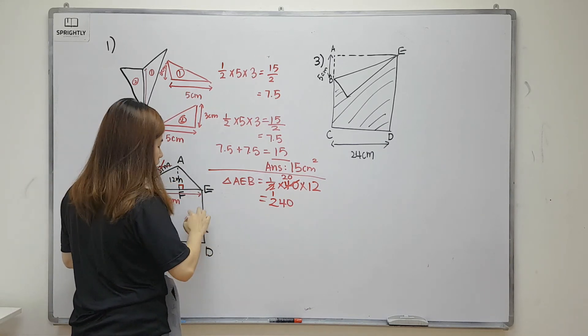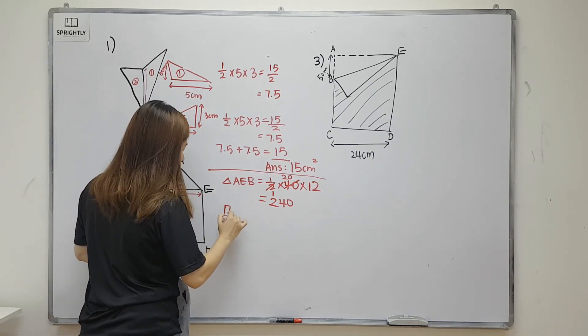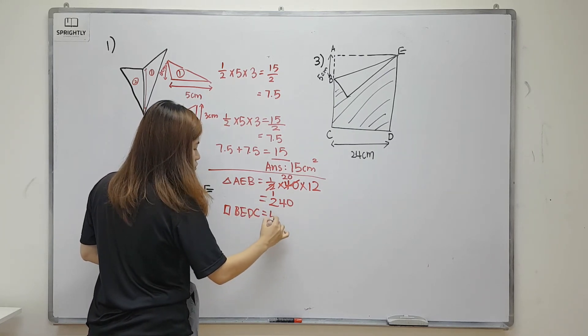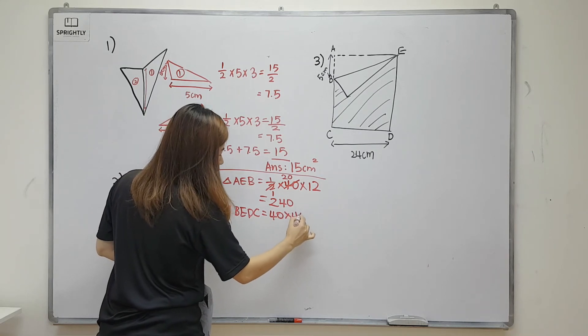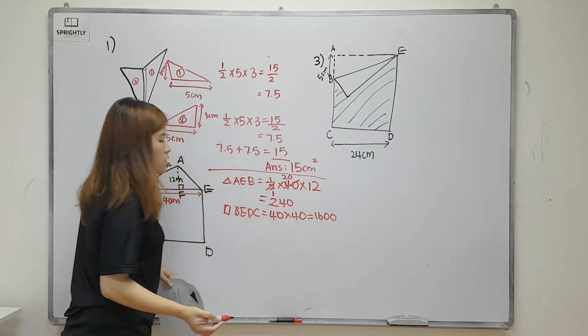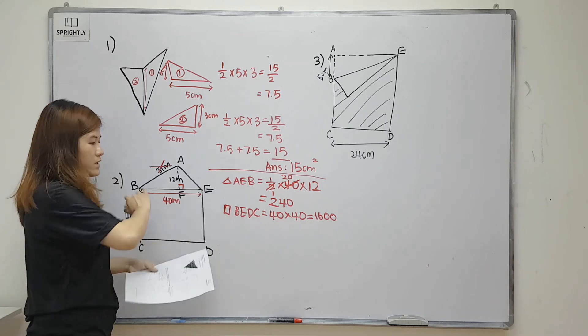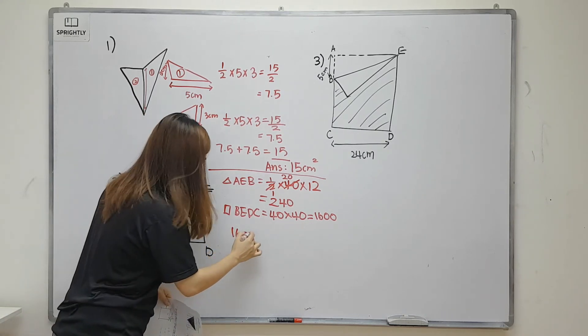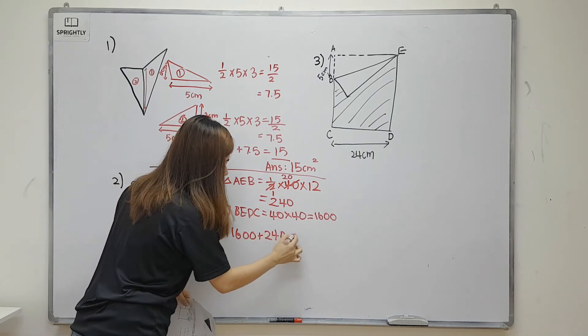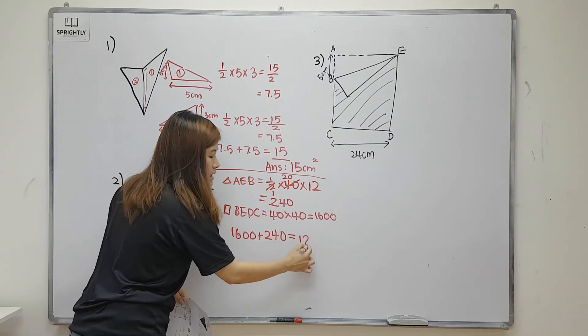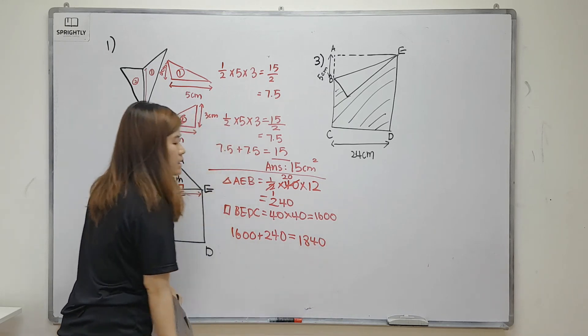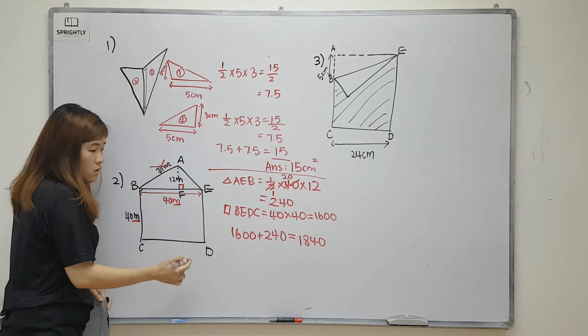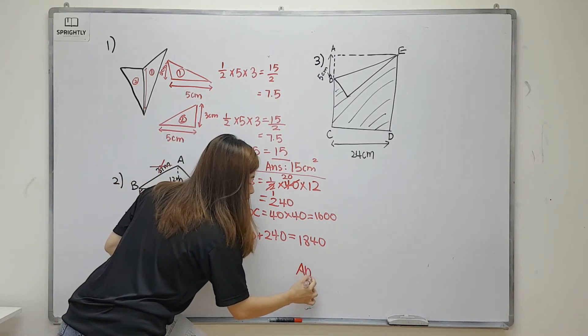So your square BEDC is equal to 40 times 40, which is 1600. Then in order to find the area of the total figure, I just have to add them together - 1600 plus 240. You should be able to get 1840. Again, please be very careful - the unit here is in meters, so your final answer should be 1840 meter squared, not centimeter squared.